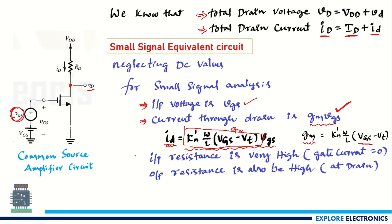Looking at resistance parameters: input resistance will be very high, essentially infinite, in the MOSFET, because current flowing into the MOSFET is always zero due to the SiO₂ layer, which does not allow gate current to flow in. Output resistance is also considered infinite by neglecting channel length modulation.